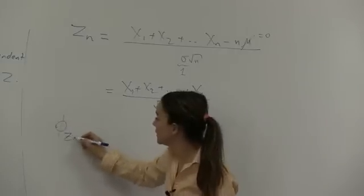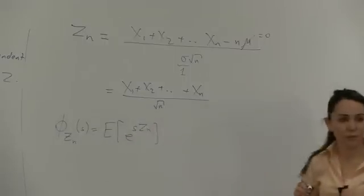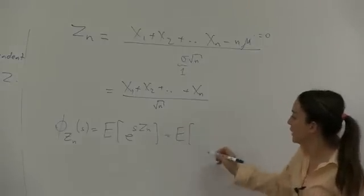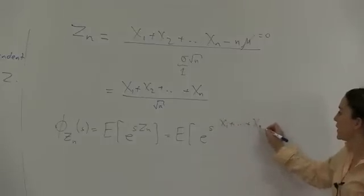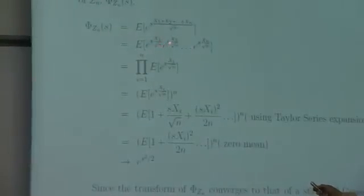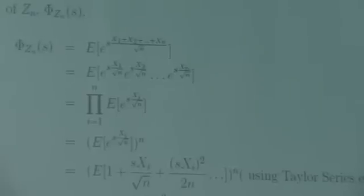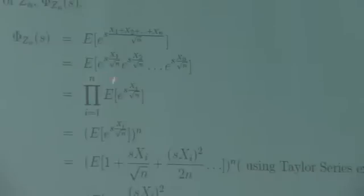So, what is phi zn of s? It's the expectation of e to the s zn. So, it's the expectation of e to the s x1 plus all the way up to xn divided by square root of n. Now, what we can do is break this exponent into the different components. The exponent of the sum of these things is the product of e to the s x1 over square root of n, e to the s x2 over square root of n, etc. Now, how do we go from this line to this line? The expectation of the product suddenly became equal to the product of the expectations. Why? Because the xi's are independent. So, by independence, we get this.